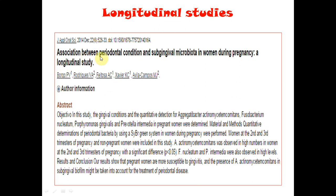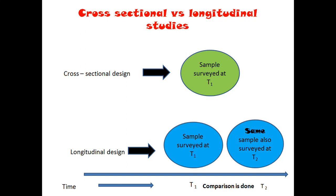Again, you can see that the association between periodontal condition and microbiota in women during pregnancy is a longitudinal study — there will definitely be a follow-up. In cross-sectional study, a sample will be surveyed only at one point of time, whereas in longitudinal study, the same sample will be followed at time one, time two, time three, and time four.